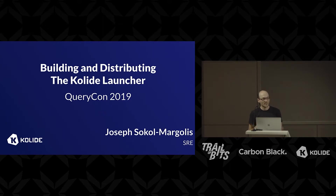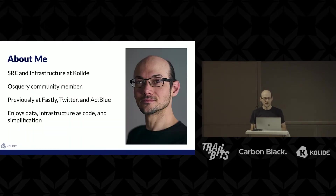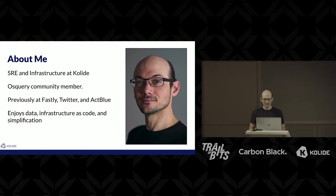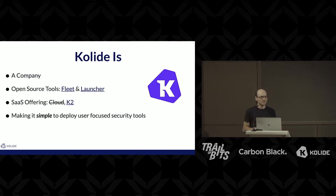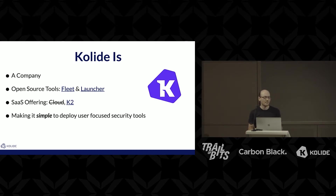A bit about the problems we have that sort of led to this path, why we do it, and how we approach that. I'm an SRE and infrastructure for Collide, OS Query community member. I've been at Fastly, Twitter, and ActBlue, and hang out around infrastructure as code and simplification. Collide is a company. We have open source things — Fleet and Launcher are the two. We also have a SaaS offering. K2 is the new one. We are really passionate about making it simple to deploy user-focused security tools.